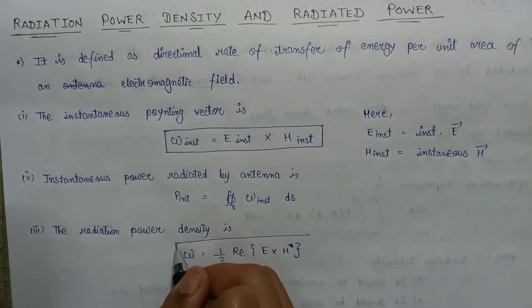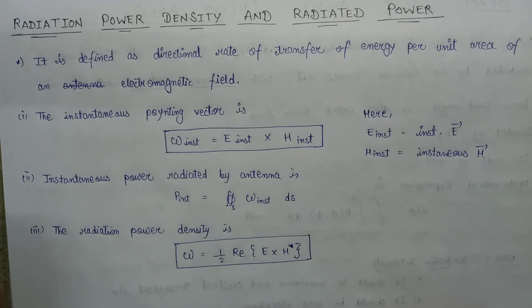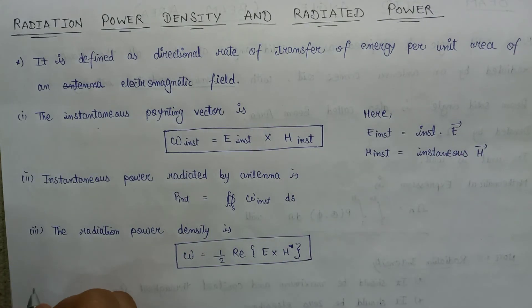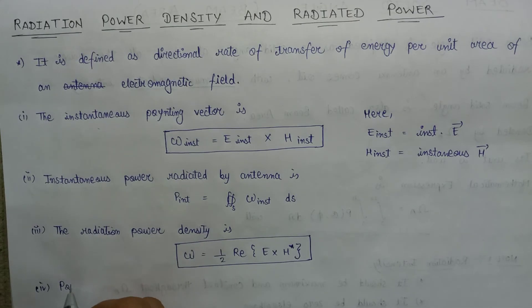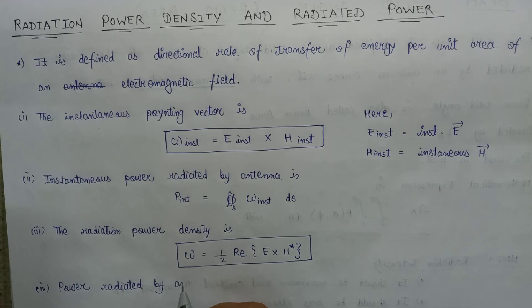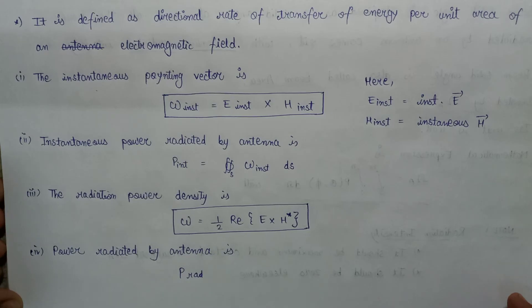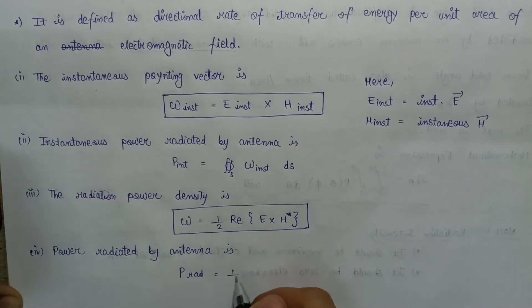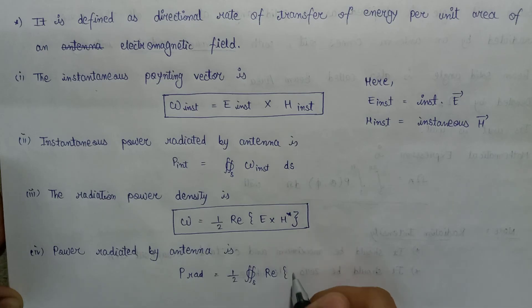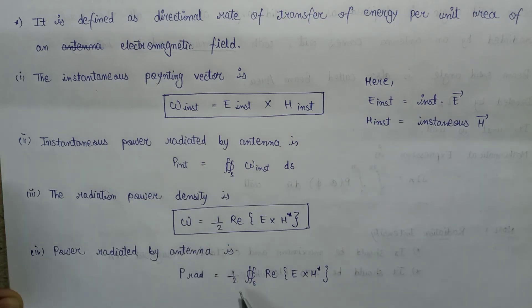The power radiated by the antenna is given as P radiated, where the expression for P radiated equals one half times the integration over the closed surface of the real part of E cross H asterisk. That is, the integration over the closed surface of the radiation power density gives the radiated power by the antenna.